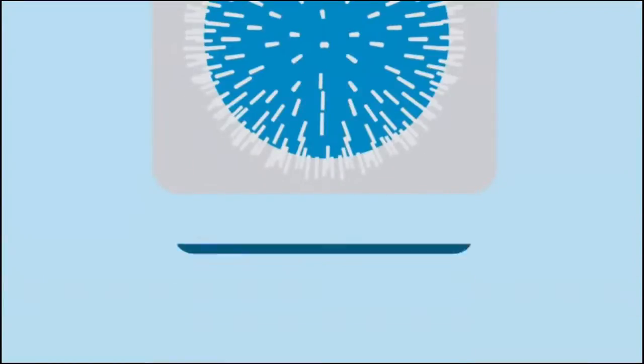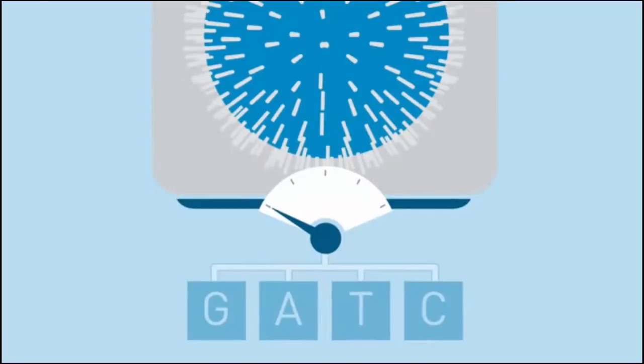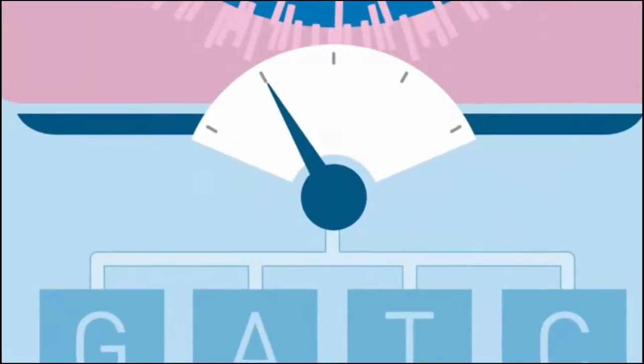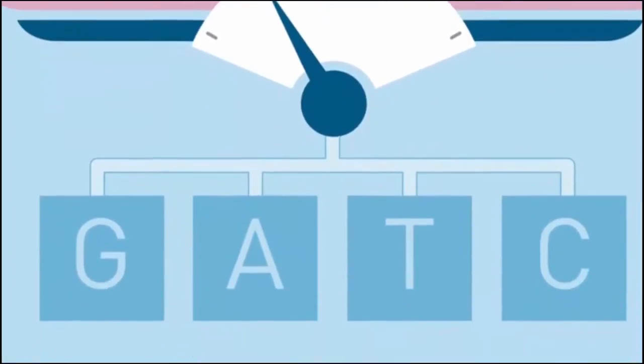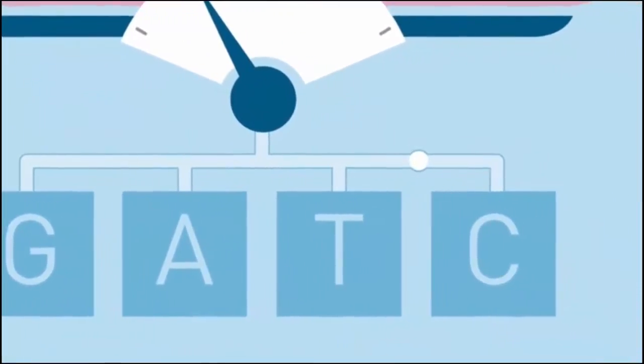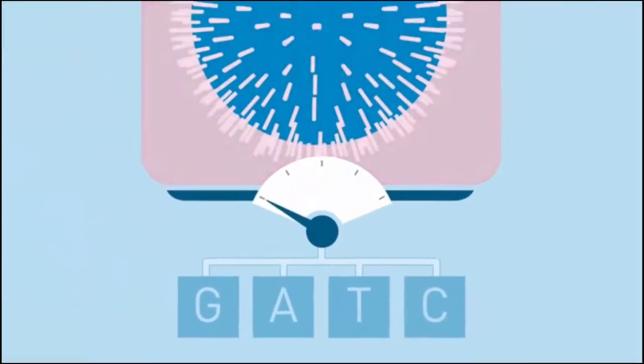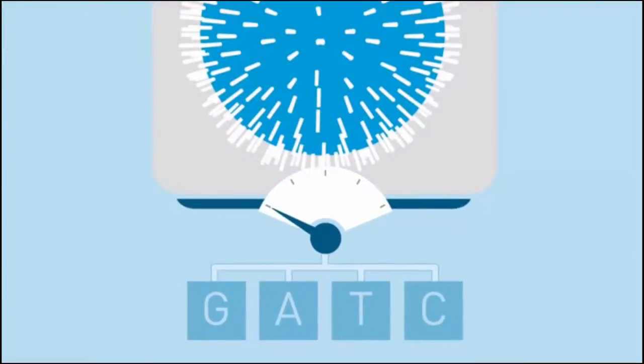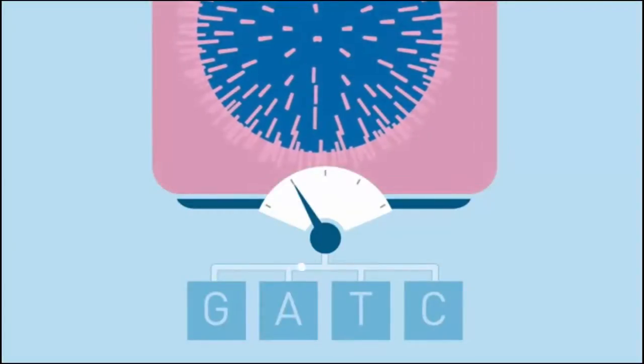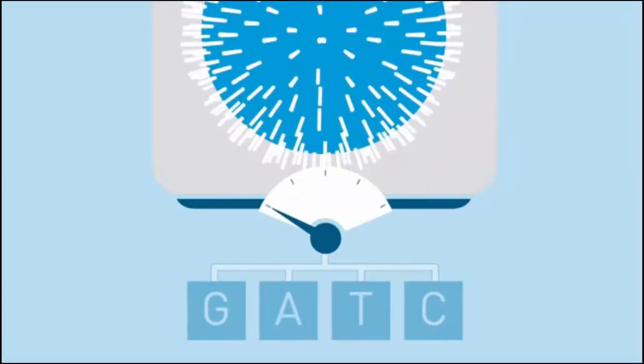The hydrogen ion changes the pH of the solution in the well. An ion sensitive layer beneath the well measures that change in pH and converts it to voltage. This voltage change is recorded, indicating that the nucleotide was incorporated and the base was called. In essence, each well works as the world's smallest pH meter. The process is repeated every 15 seconds with a different nucleotide washing over the chip.